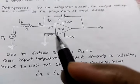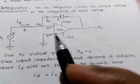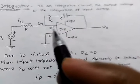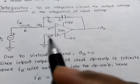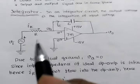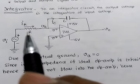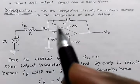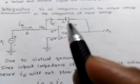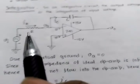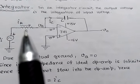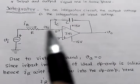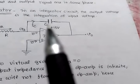Since the input impedance of the op-amp is infinite, its input terminals draw zero current. Both the inverting and non-inverting input terminals will draw zero current. Therefore, the current flowing through resistance R will be the same as the current flowing through capacitance C. We will now find the current flowing through resistance R.